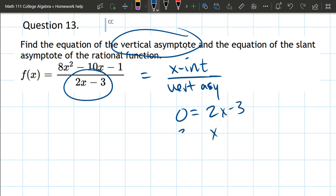And then you solve for x. And do that, add 3, divide by 2. That's your vertical asymptote.